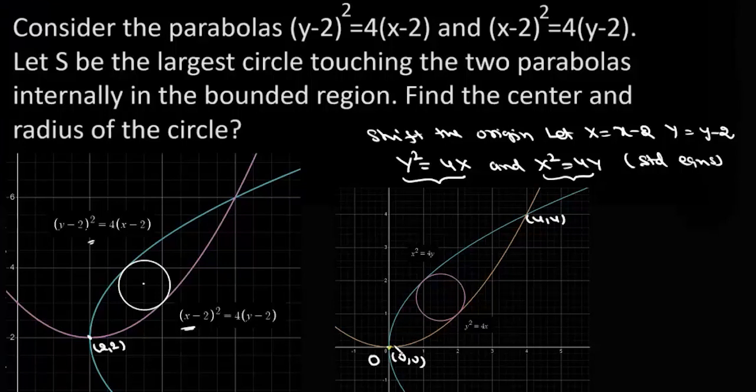So the two parabolas are reflections of each other about y = x line. From symmetry we can say that center of the circle lies on this line and suppose the center is (h,h).